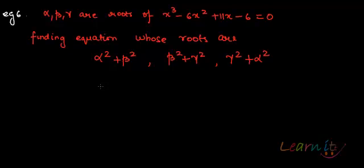Alpha, beta, gamma are roots of the given equation x³ - 6x² + 11x - 6 = 0. We need to find the equation whose roots will be α² + β², β² + γ², and γ² + α².